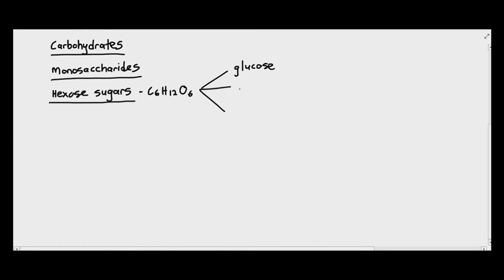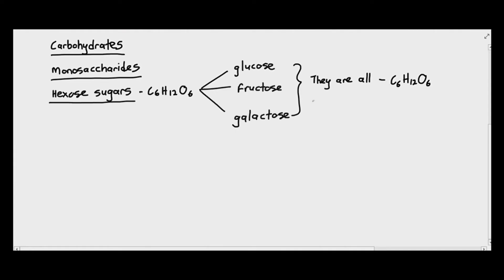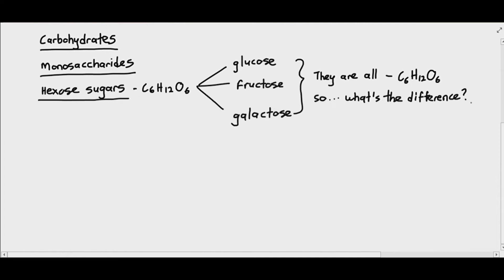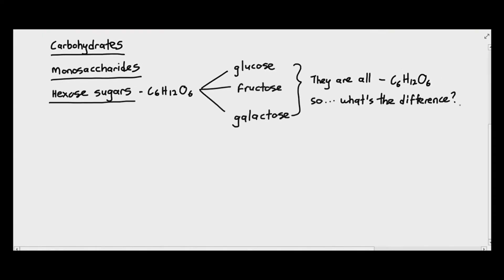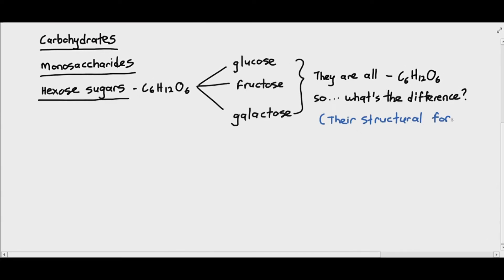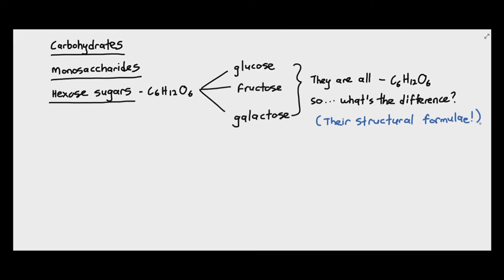So, if you look at hexose sugar, C6H12O6, it is divided into glucose, fructose, and galactose. Here's the extremely interesting thing. They all have the same molecular formula. Glucose, fructose, and galactose are all made up of six carbon, 12 hydrogen, and six oxygen. So, what makes them different then? The reason why glucose, fructose, and galactose are different is because of their structural formulae, or how they are built, basically. Or how the carbon, hydrogen, and oxygen are arranged.